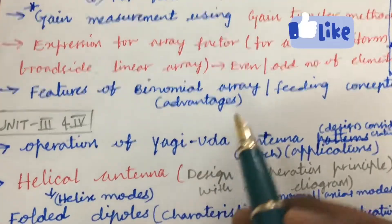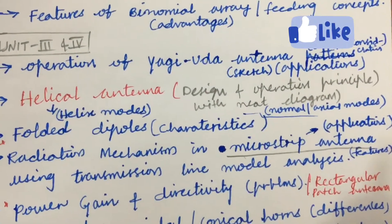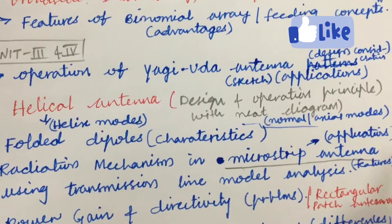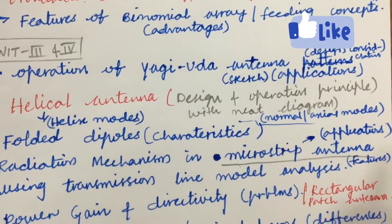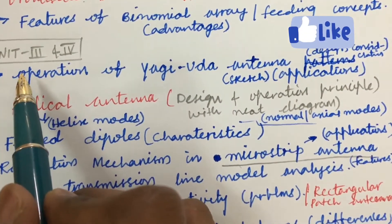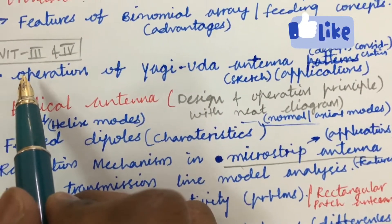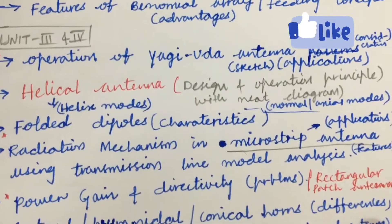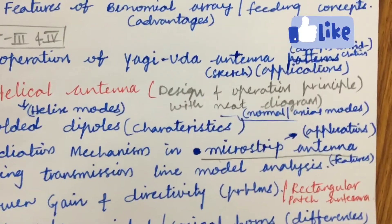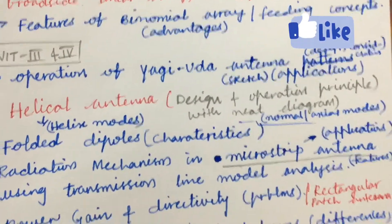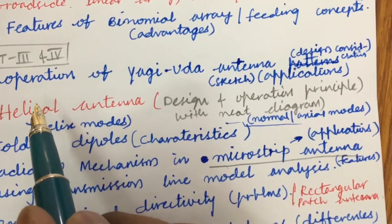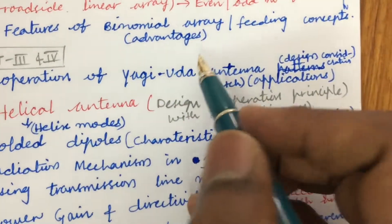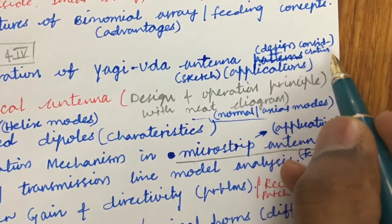I am going to consider Units 3 and 4 together. Unit 5 is too lengthy so I have not taken it into full consideration — only about one or one-and-a-half questions may come from Unit 5. As per the COVID pattern, the first 3 units cover 6 questions. For Units 3 and 4, expect one-and-a-half questions from each. The operation of Yagi-Uda antenna, its design considerations, sketch, and applications is a gunshot question from this unit.